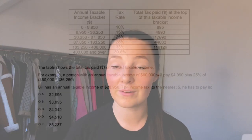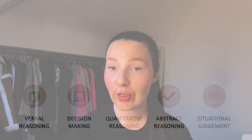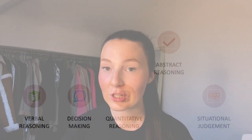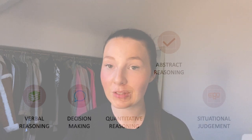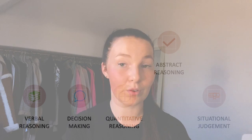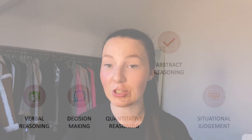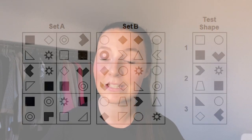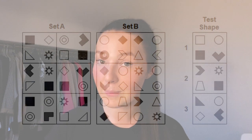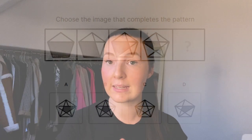Questions in the quantitative reasoning section are presented with five answers and you have to choose the correct one. The fourth subsection is abstract reasoning. In this section, you're given two sets of shapes and you have to identify what the pattern or relationship is between these two sets. You should expect 50 questions in 12 minutes, which leaves you with roughly 20 seconds per question. These questions can ask you to identify which set a shape belongs to or to choose the next shape in a sequence.